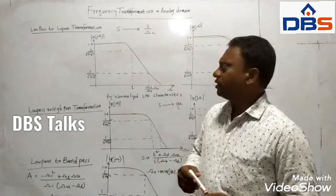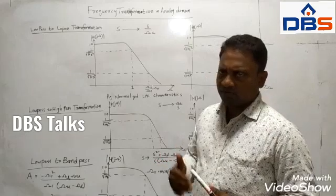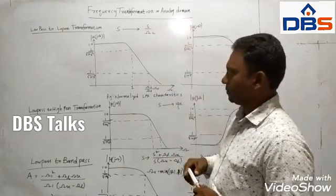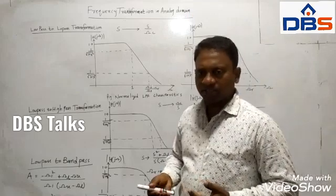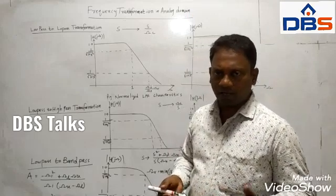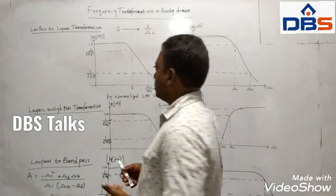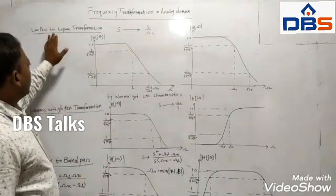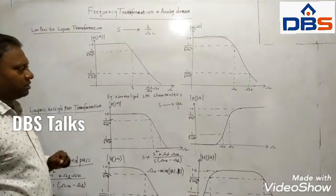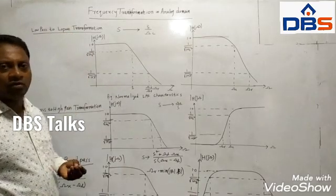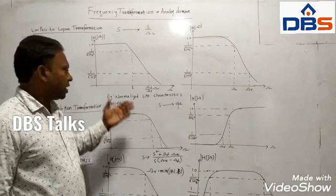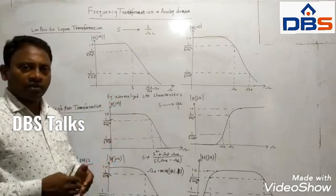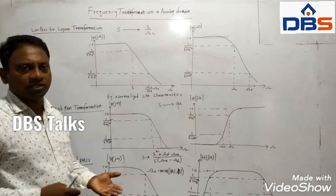We will see frequency transformation in the analog domain and digital domain as well. First, we will see different characteristics. The first one is low-pass to low-pass transformation. We may have some doubt: why do we have to transform a low-pass filter to another low-pass filter? What is the necessity of that?